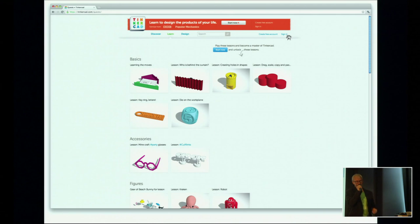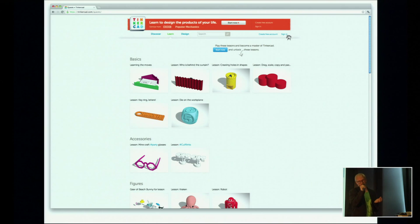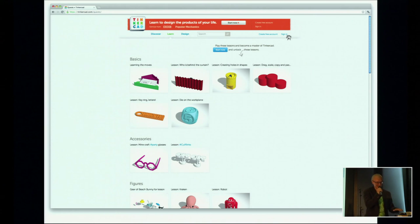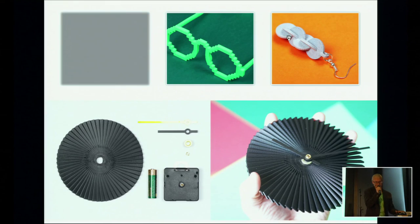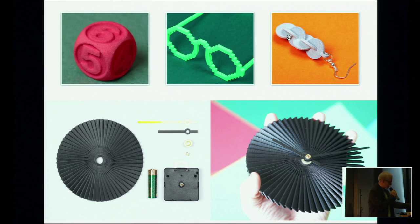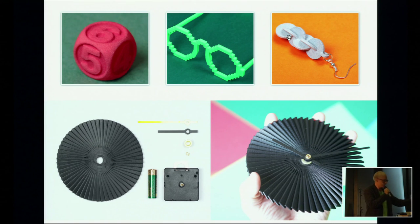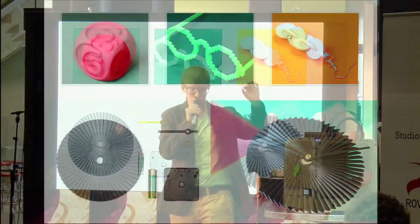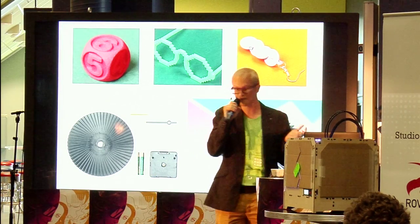Here are a few of our lessons that you can follow step by step. They look pretty adorable, and the greatest thing is that once you do these lessons, you already start creating real products. The first minute you use Tinkercad, you're making real products you can 3D print. Here you have party glasses — not just a 3D design, but a real product. And here's a dice; if you print five of them, you have a Yahtzee game.